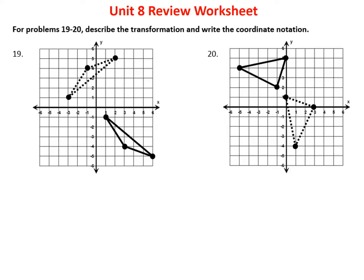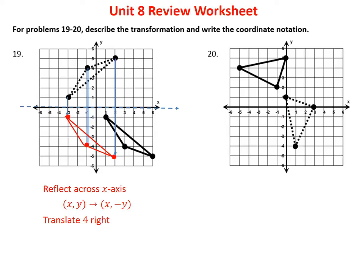For problems 19 and 20, we describe the transformation and write it in coordinate notation, going from the dotted figure to the solid figure. In the first one, I realize I can reflect across the x-axis to get the dotted triangle in the same orientation as the black one. So the first part of the coordinate notation is (x, y) → (x, −y). Then I simply need to translate it four units right, adding 4 to x, giving the combined notation: (x, y) → (x + 4, −y).